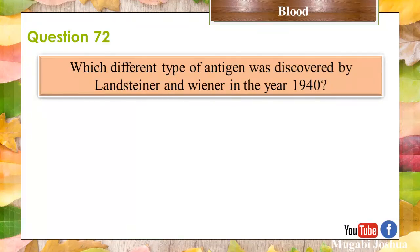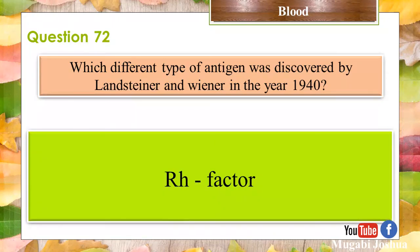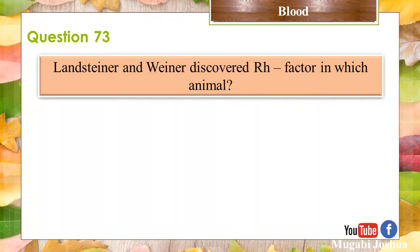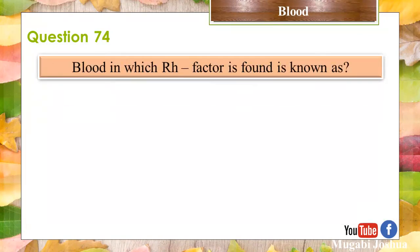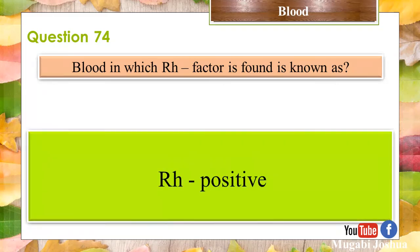Question 72: Which different type of antigen was discovered by Landsteiner and Wiener in the year 1940? Rhesus factor. Question 73: Landsteiner and Wiener discovered the Rhesus factor in which animal? Rhesus monkey. Question 74: Blood in which Rhesus factor is found is known as? Rhesus positive.